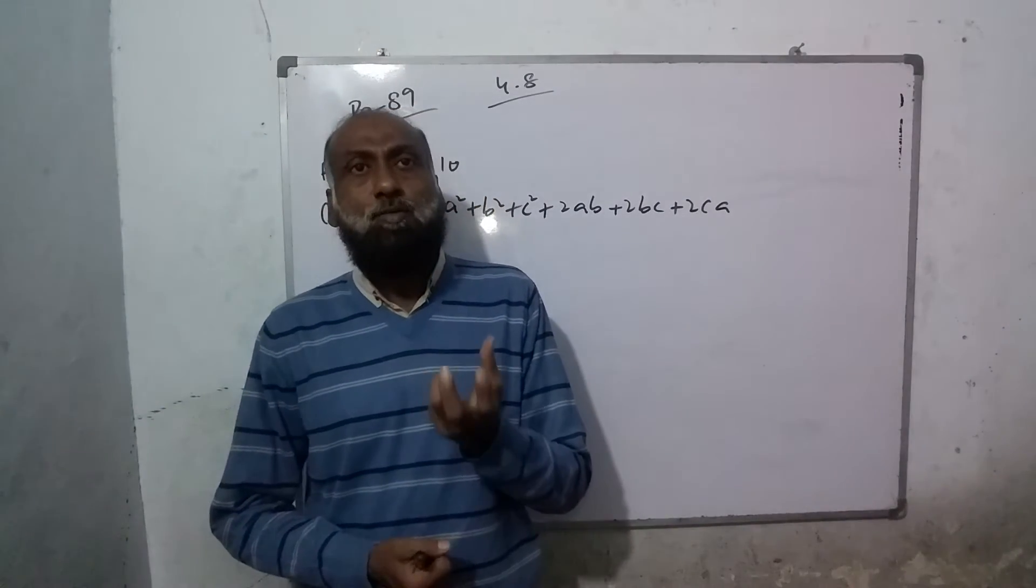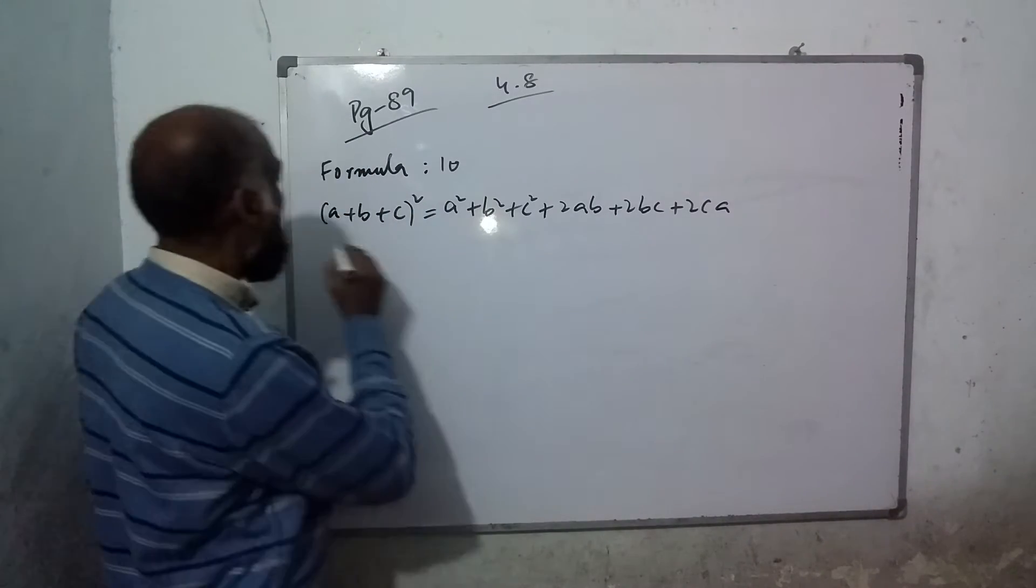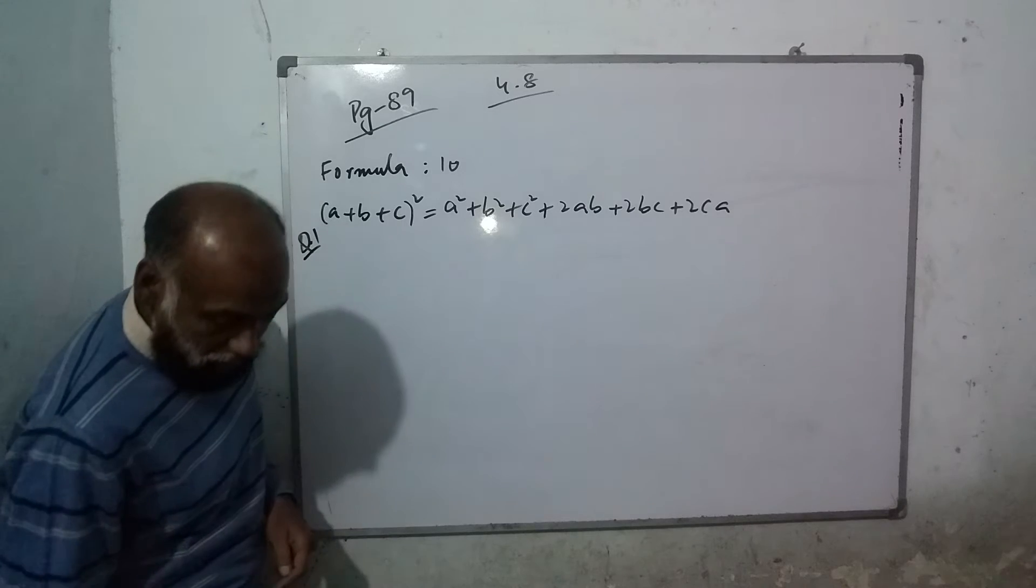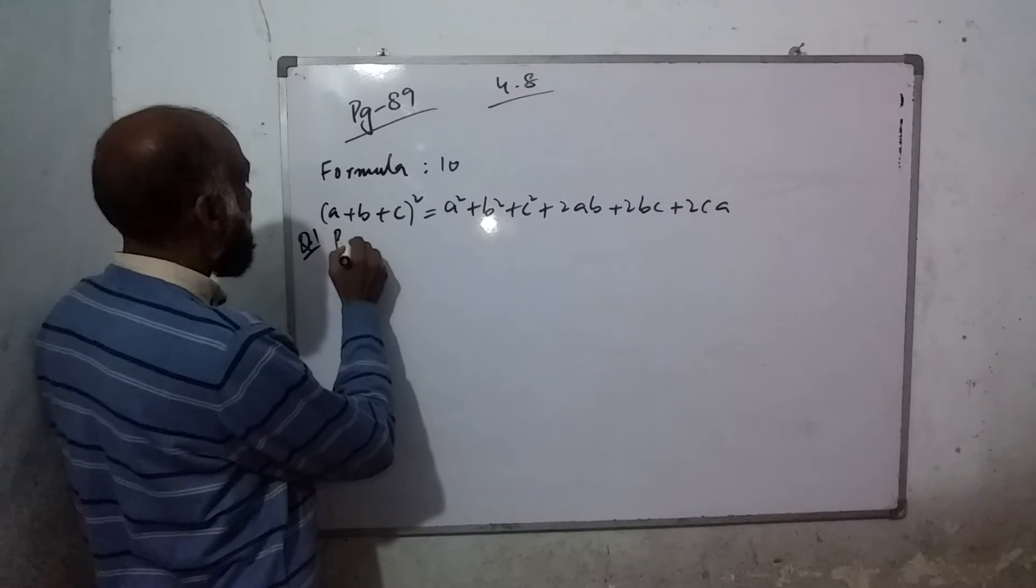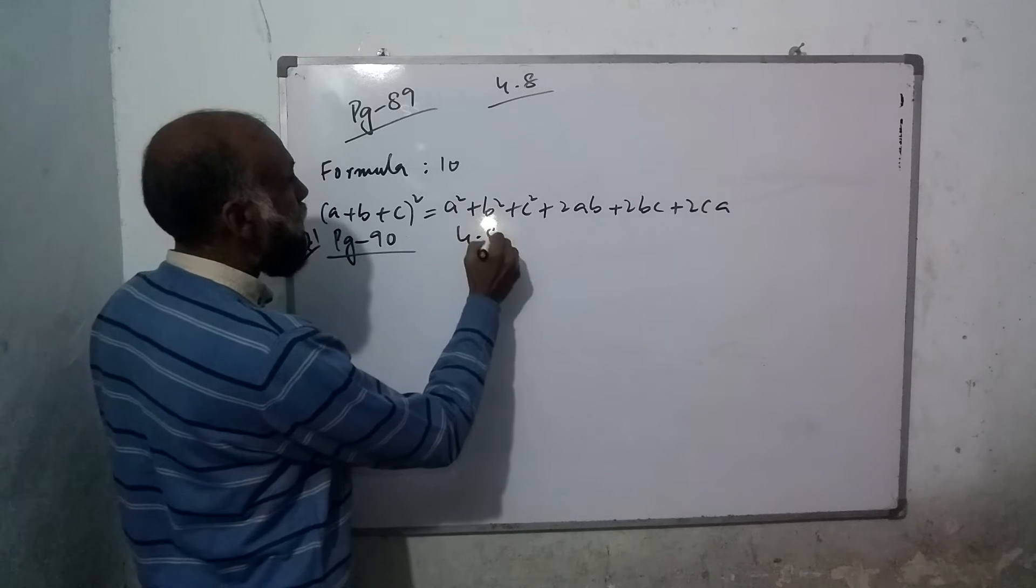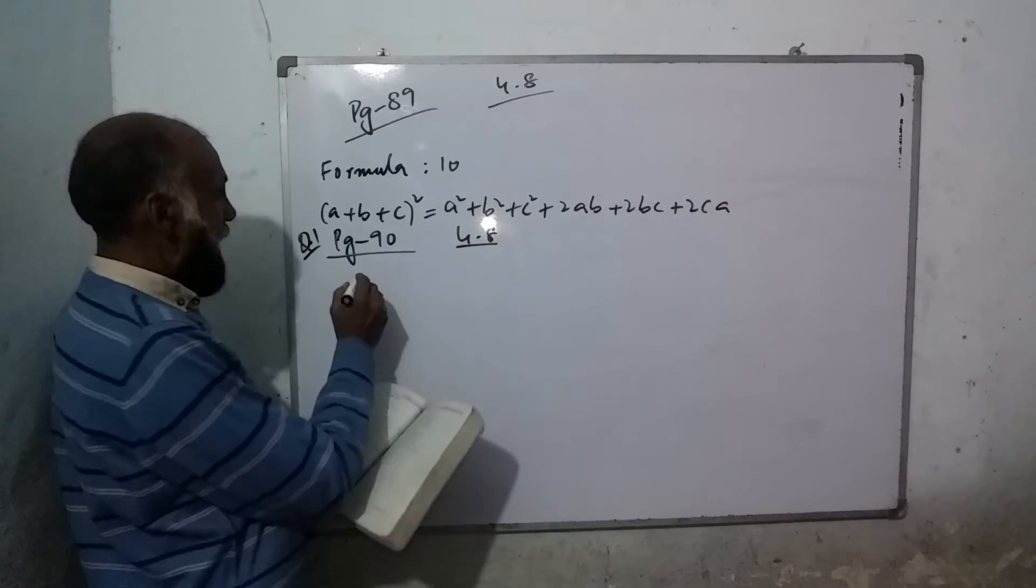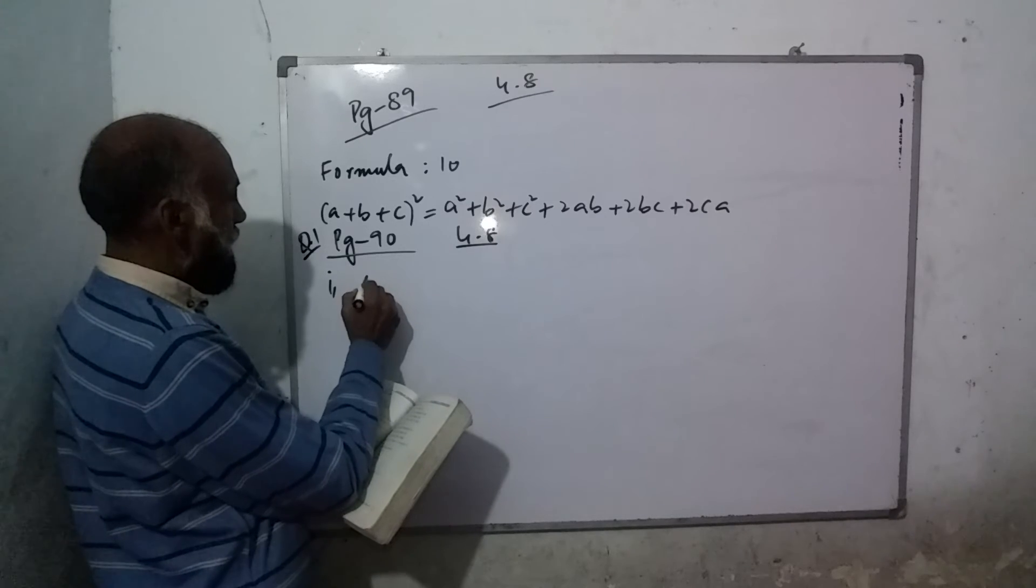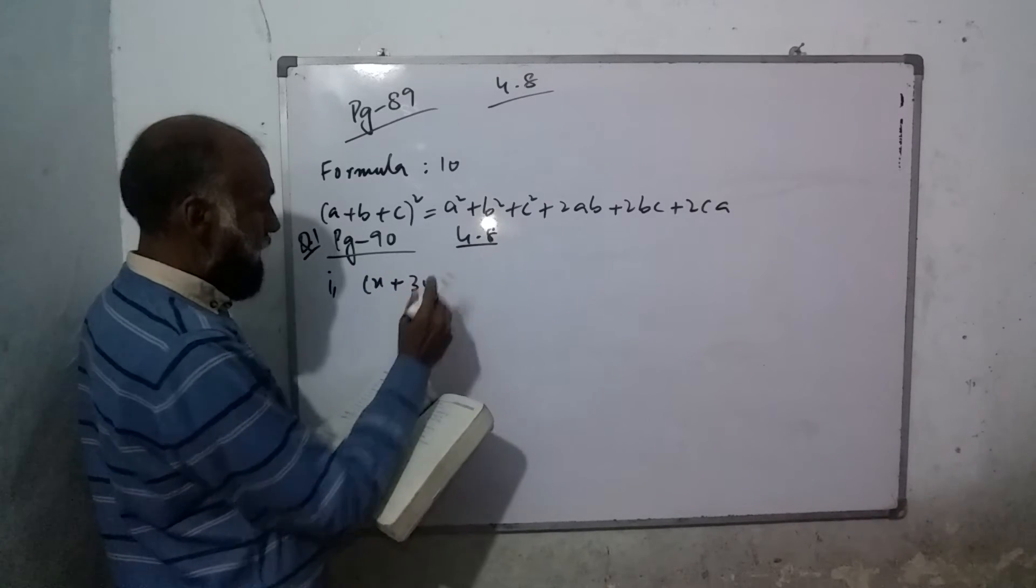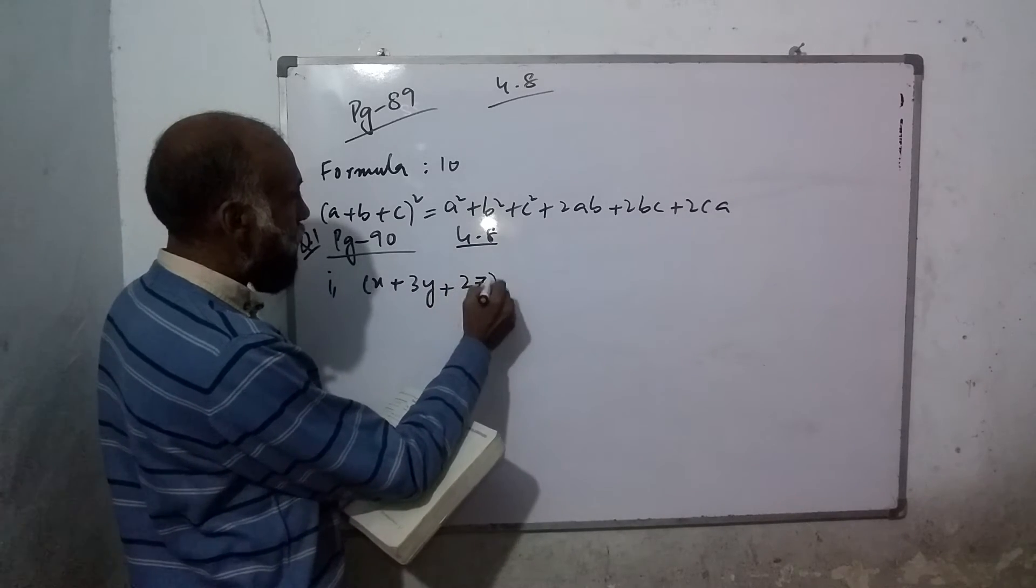This formula is for the whole square of 3 terms. Our example is (x + 3y + 2z) all squared.